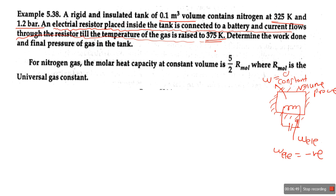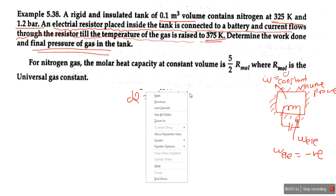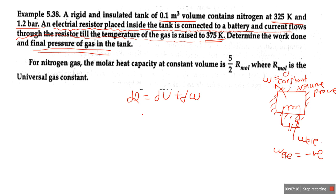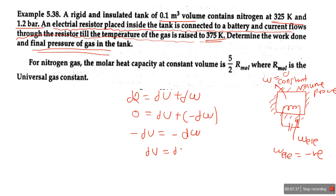The question asks to determine the work done and the final pressure of the gas. We need the fundamental first law formula: dQ = dU + dW. Since the tank is insulated, dQ = 0. With work done on the system being negative, the equation becomes: 0 = dU + (−dW), so dU = dW. Work done equals the change in internal energy, which is m·cv·ΔT.